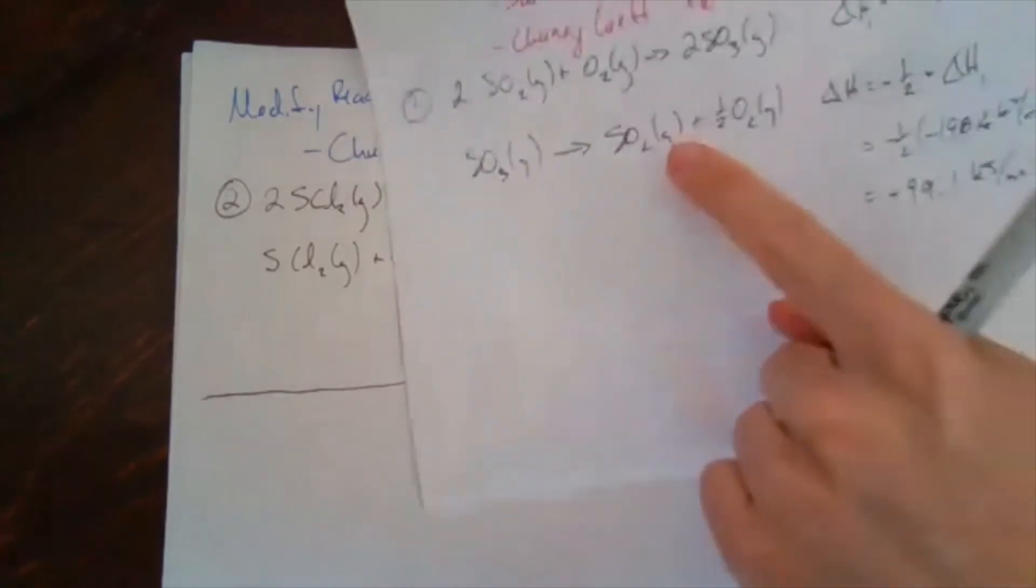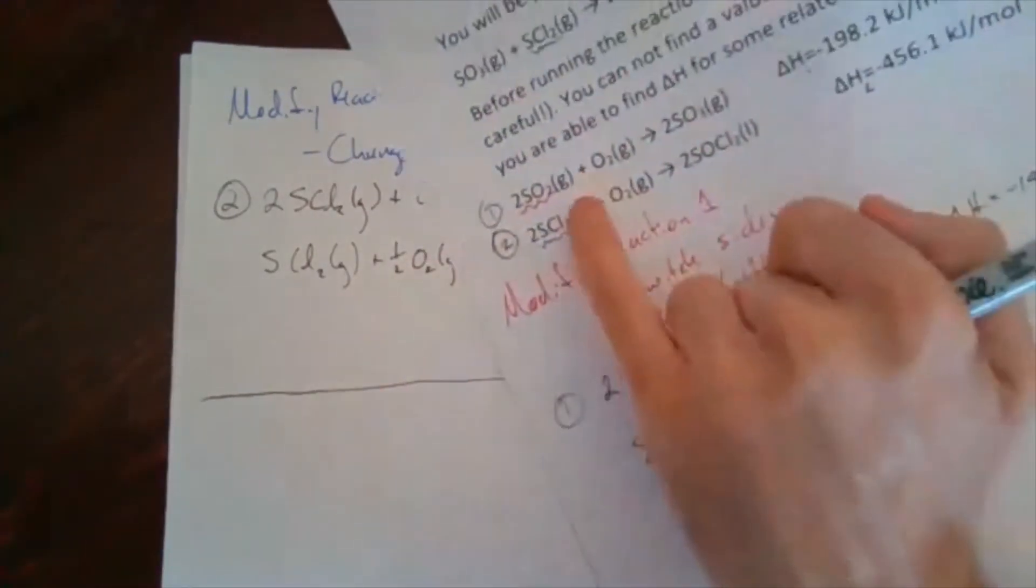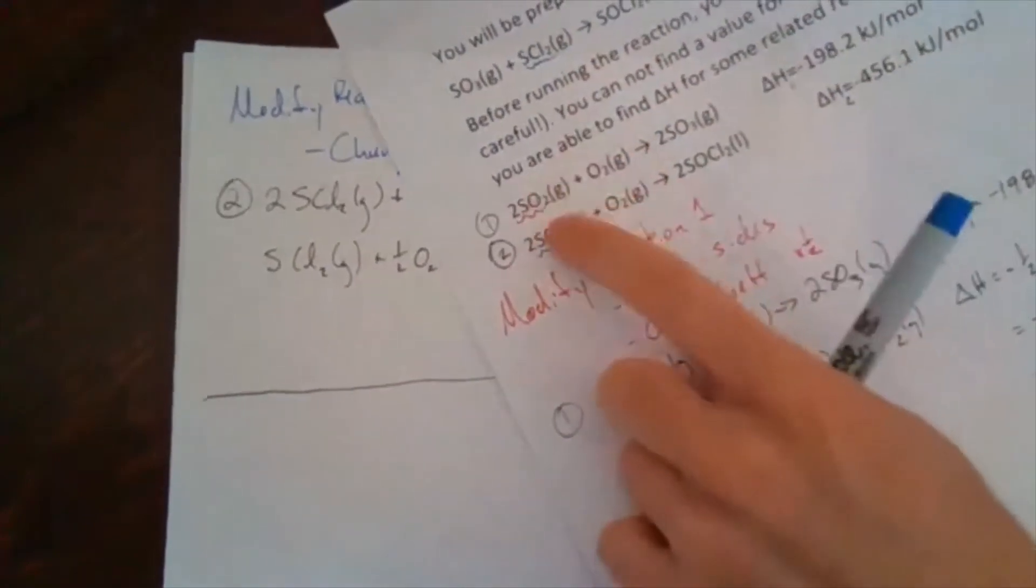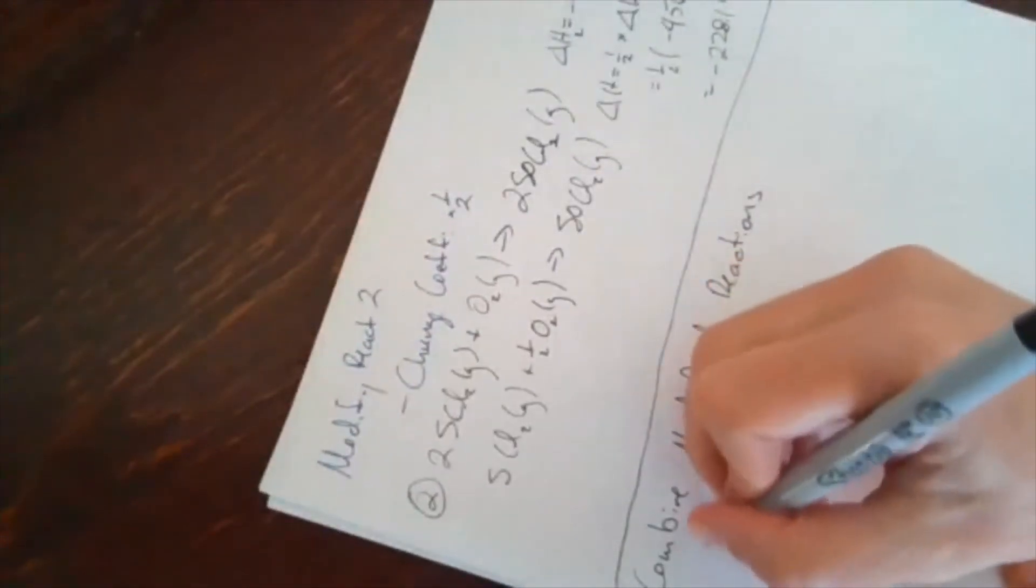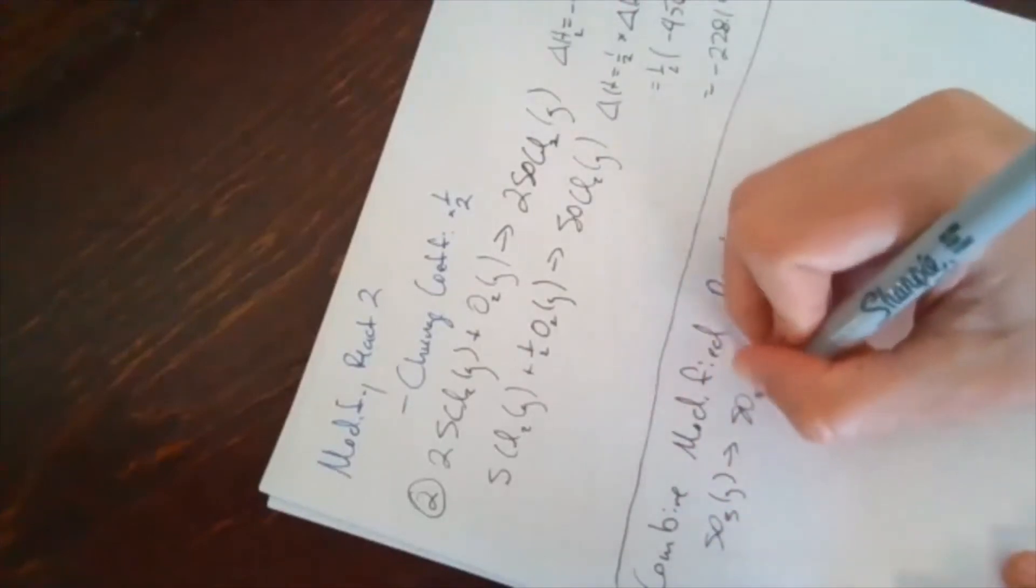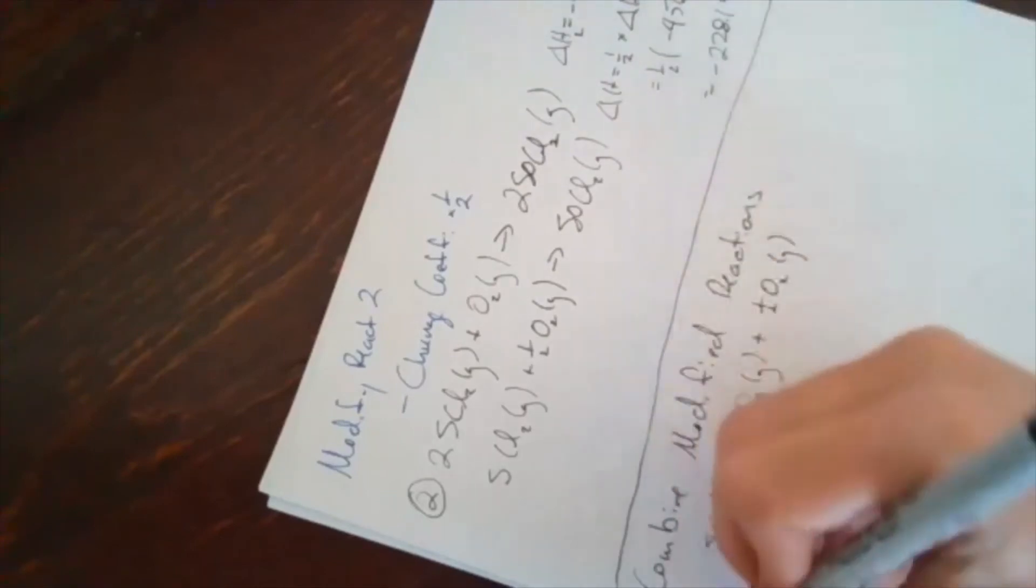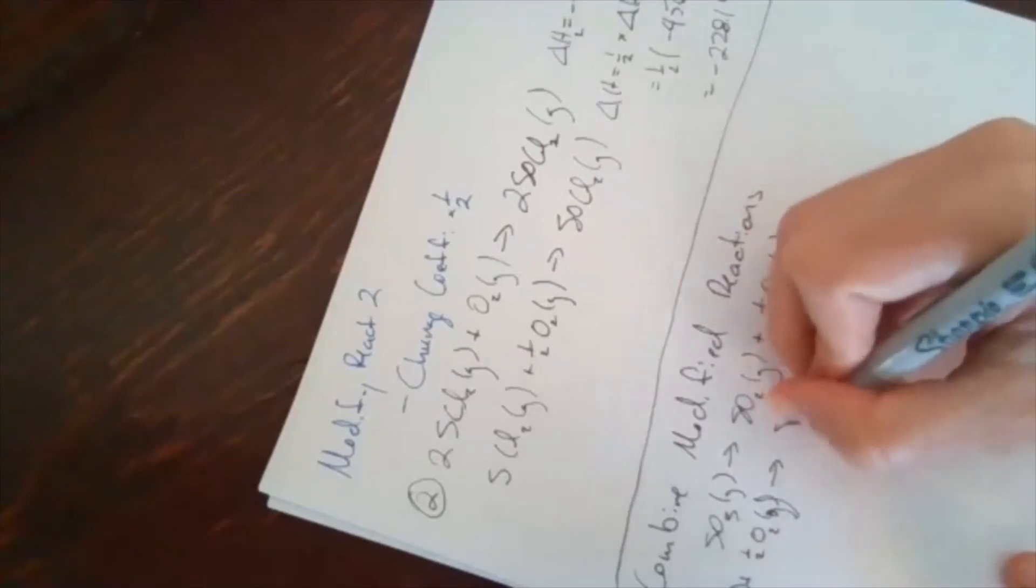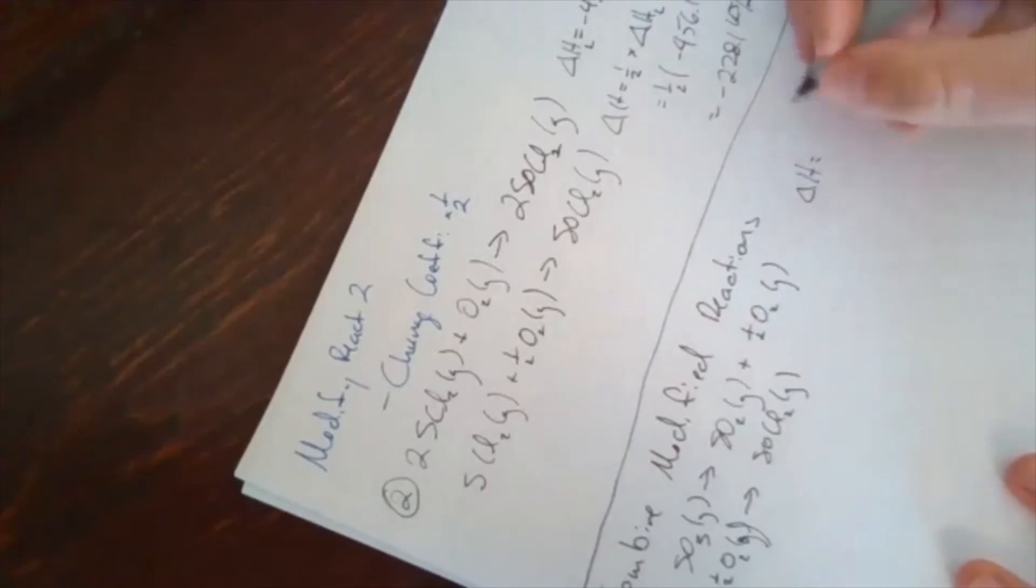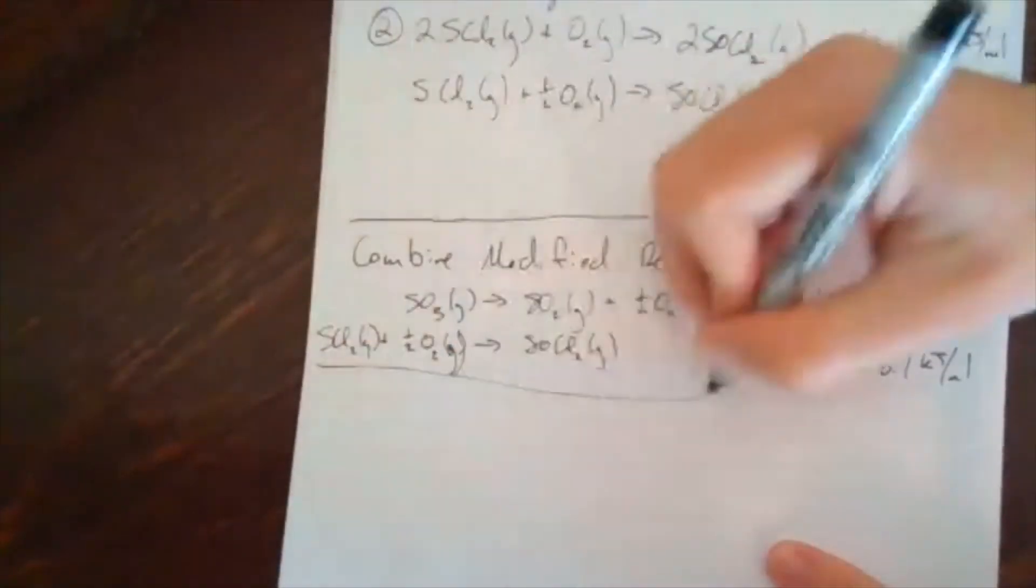So I've got my modified reaction one, got my modified reaction two. I modified them to look like the correct substances in those reactions were on the right side and have the correct coefficient as in my target reaction. And so now I combine them. And so that is SO3 gas becomes SO2 gas plus one half O2 gas. SCl2 gas plus one half O2 gas becomes SOCl2 gas. Delta H on this one was positive 99.1 kilojoules per mole. And delta H on this one was negative 228.1 kilojoules per mole.